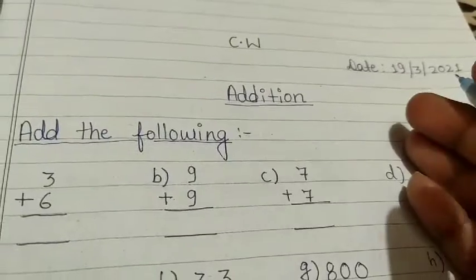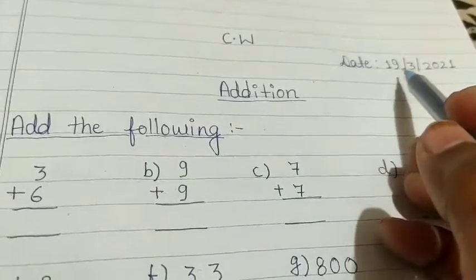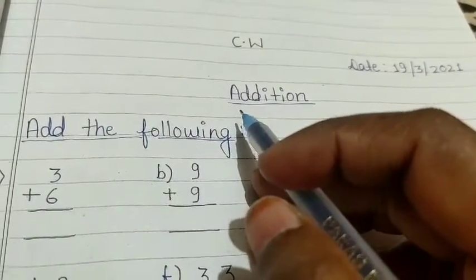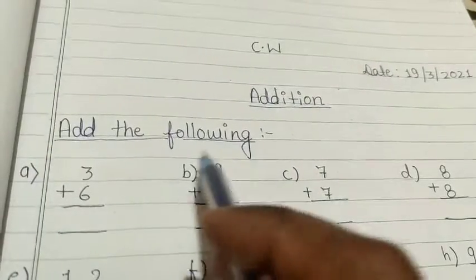Hello students, very good morning. This is your math period. Yesterday we had write and learn table of two and three. Today we will solve addition questions. Now take out your copy and your pencil. Let's solve. First of all, write in your copy: write the date — today is 19 March 2021. After that, write the heading: Addition. Now come to the statement: add the following.